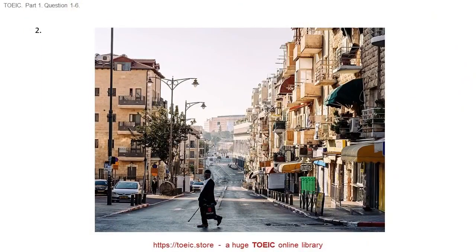Number 2. Look at the picture marked number 2 in your test book. A. A man is boarding a coach. B. A man is looking for a street sign. C. A man is crossing the road. D. A vehicle is entering a garage.